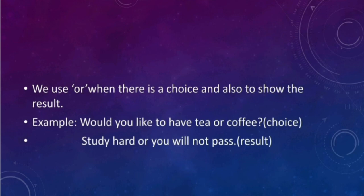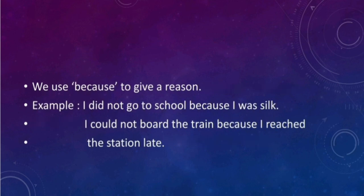We use 'or' when there is a choice and also to show a result. For example: 'Would you like to have tea or coffee?' — a choice is given. 'Study hard or you will not pass' — if you don't study hard, the result is that you won't pass. We use 'because' to give a reason. For example: 'I did not go to school because I was sick' — a reason is given. 'I could not board the train because I reached the station late' — in both sentences, a reason is given using 'because'.